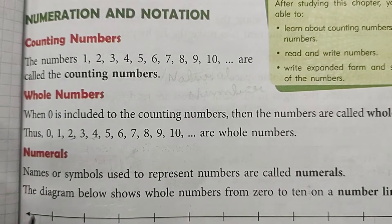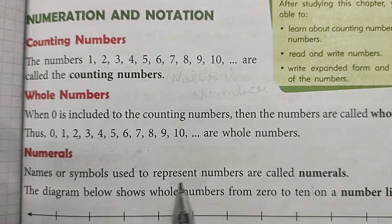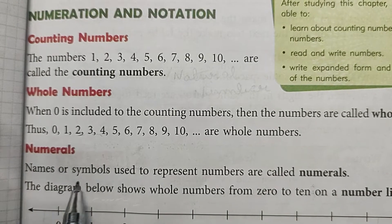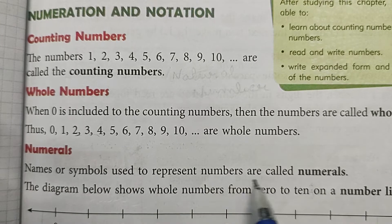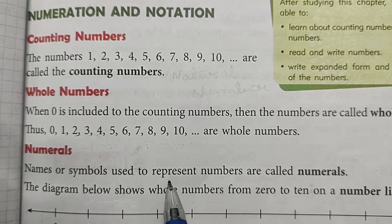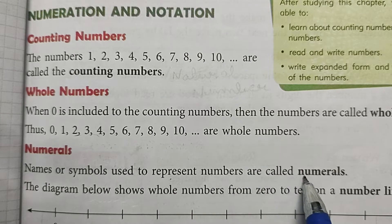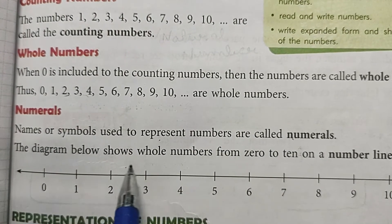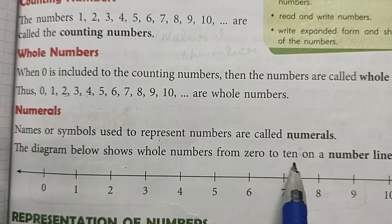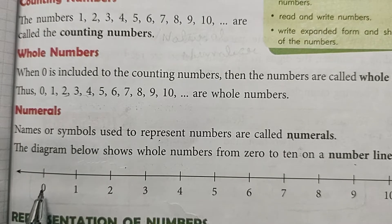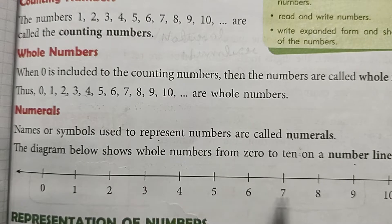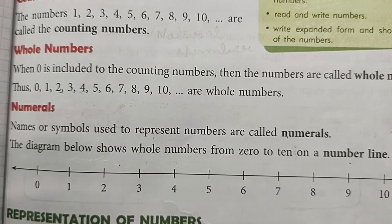Now, numerals: names or symbols used to represent numbers are called numerals — جو بھی names یا symbols use کیے جاتے ہیں کسی بھی number کو represent کرنے کے لیے انہیں numerals کہا جاتا ہے۔ The diagram below shows whole numbers from 0 to 10 on a number line — یہ diagram ایک number line پر 0 سے لے کے 10 تک کے numbers کو show کر رہا ہے۔